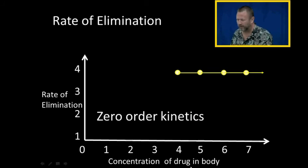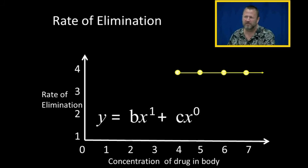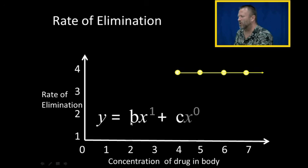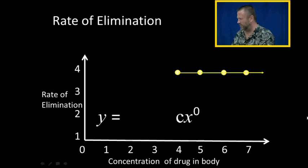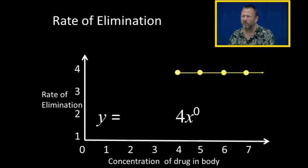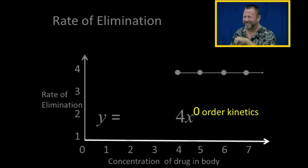Let's talk about zero-order kinetics. The zero-order kinetics also comes from linear equations. When you look at the constant, remember there is an imaginary X to the zero power — and anything to the zero power is equal to one. If I take the coefficient of X and make it zero, I end up with Y equal to some constant. My constant is equal to four, so Y is equal to four — but really, Y is equal to four times X to the zero power. See that little zero? That's where zero-order kinetics comes from.